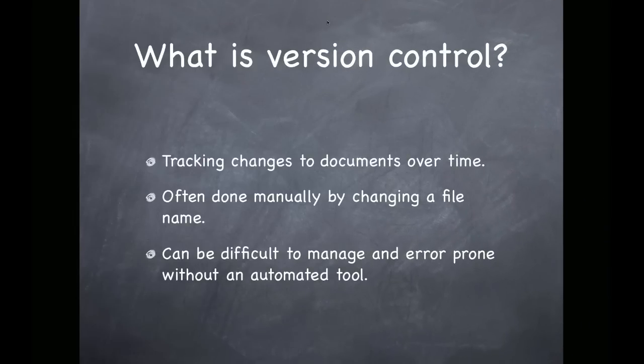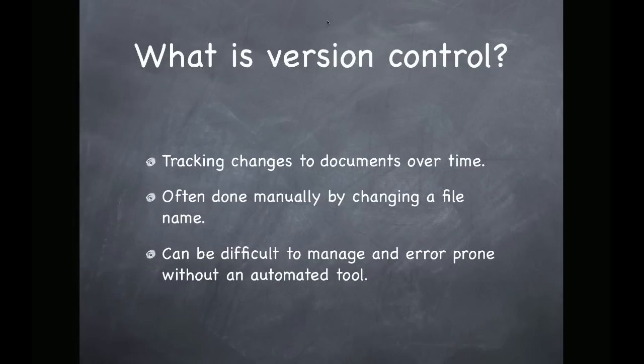So what is version control? Well basically it's just keeping track of changes that occur to a file over time. If you've ever worked on some file and decided rather than just overriding the last copy with your changes, you would save it as a new file, maybe with your name, a date, or some number at the end of the original name, you were doing manual version control.